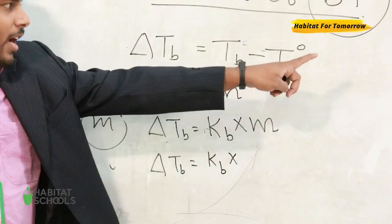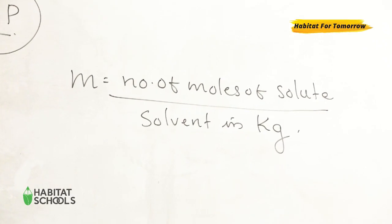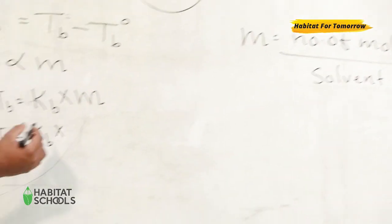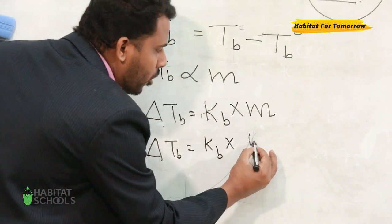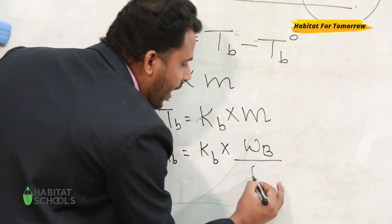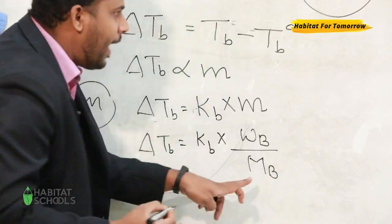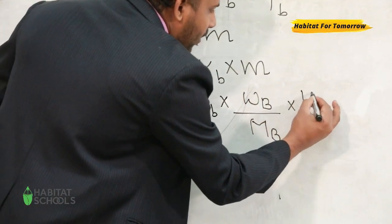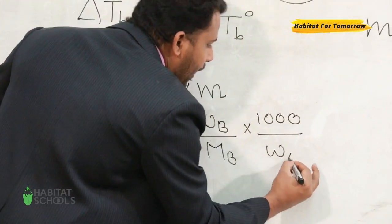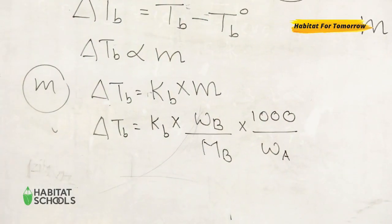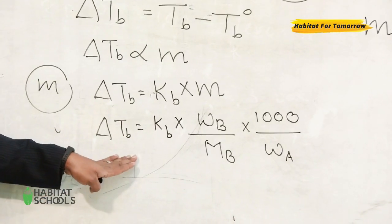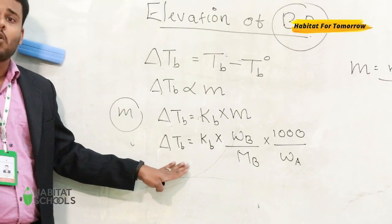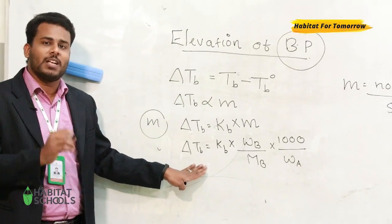Molality is the number of moles of solute dissolved in the solvent per kilogram. The number of moles of solute equals Wb divided by Mb, and solvent in kilograms can be written as 1000 divided by Wa. This expanded equation can also be used to calculate the molar mass of an unknown solute present in the solution.